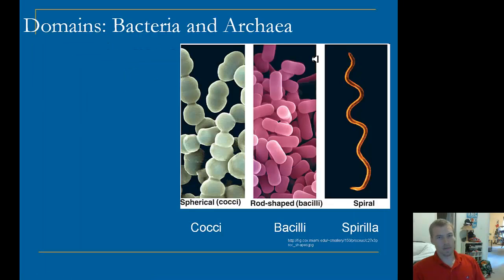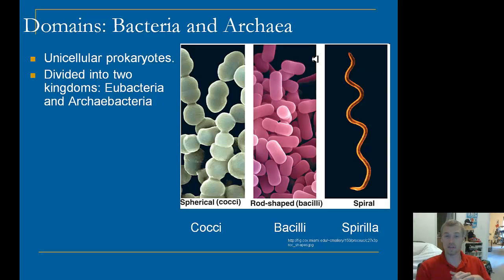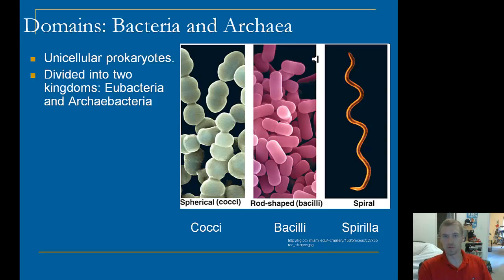Now let's talk about bacteria. There are two groupings: archaebacteria and eubacteria. They are unicellular prokaryotes, which means they're only one-celled and do not have a nucleus. Eubacteria means 'true bacteria' — 'eu' means true, just like a eukaryote is a true cell. Your eubacteria are what we traditionally think of as bacteria.